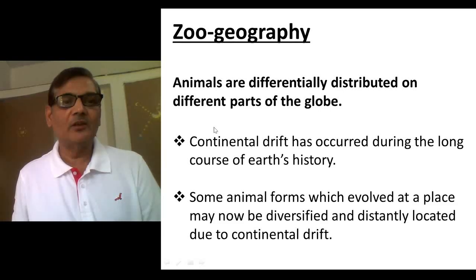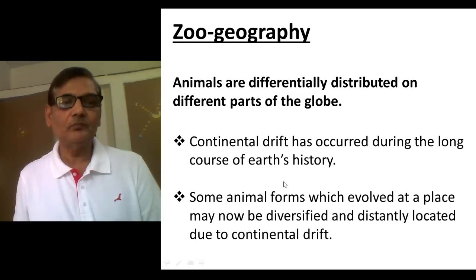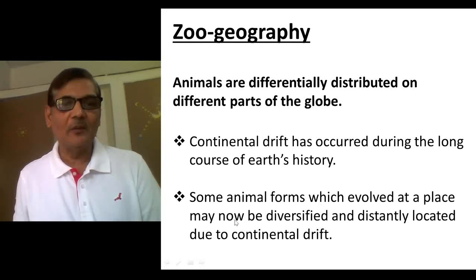The entire landmass which we observe today had not been exactly in the same form several million years back. Continental drift has occurred during the long course of Earth history. Some animal forms which evolved at a place may now be diversified and distantly located due to continental drift.